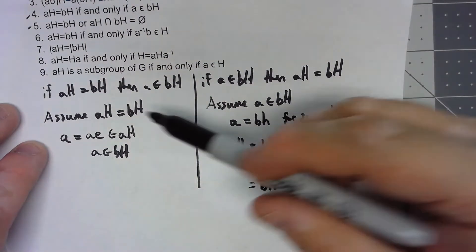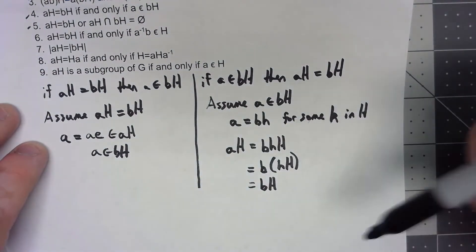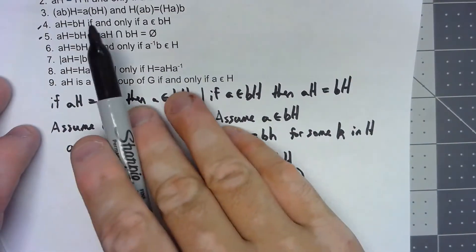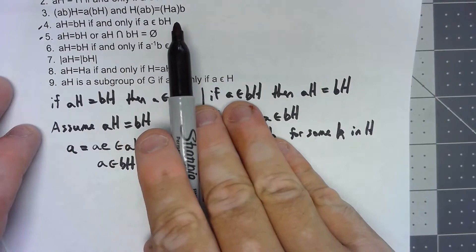So there we go, we've proven both directions, so it must mean that AH equals BH if and only if A is in BH.